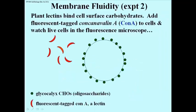Here's another experiment. Concanavalin A, or Con A, is a plant lectin — a protein that can bind cell surface carbohydrates — and that capacity was used in this experiment. The Con A was tagged with a fluorescent marker so that you could visualize it in the fluorescence microscope. The cartoon shows glycocalyx oligosaccharide-coated proteins in green, so the cell is a circle coated with sugars, and the Con A is a reddish crescent-shaped molecule.